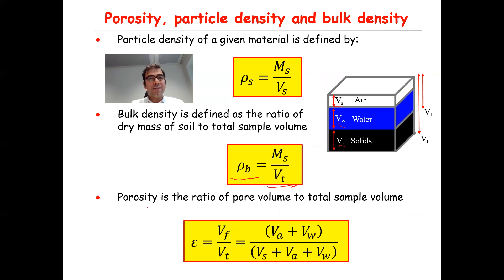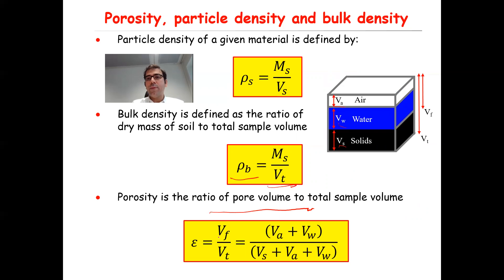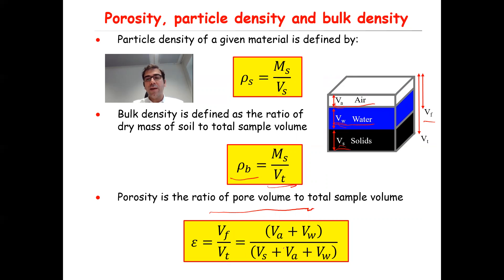Porosity, an important characteristic of a porous medium, is defined as the ratio of the pore volume to total sample volume. So epsilon, the porosity, is equal to Vf — the volume of the fluid, which is Va plus Vw — divided by Vt, the total volume. So porosity equals Vf divided by Vt, which equals Va plus Vw divided by Vs plus Va plus Vw.